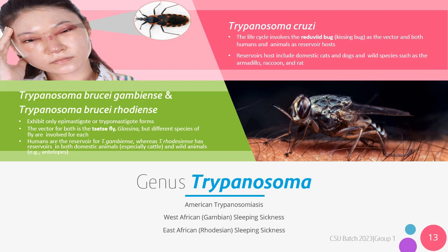Trypanosoma cruzi causes American Trypanosomiasis, also known as Chagas disease. The life cycle of this species includes the reduviid bug or the kissing bug as the vector in both humans and animals such as domestic cats and dogs, wild armadillo, raccoon, and rats, which serve as the reservoir hosts. For both Trypanosoma brucei gambiense, which causes the West African variant of sleeping sickness, and Trypanosoma brucei rhodesiense, which causes the East African variant, only epimastigote forms are exhibited. The vector for both is the tsetse fly of the genus Glossina, but different species of fly are involved for each.